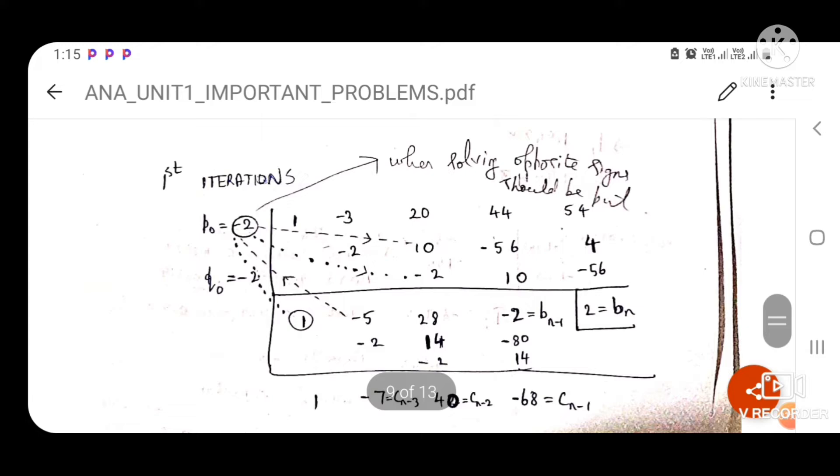Now we're doing the first iteration. We're given two initial points. When doing it, we put it in the opposite sign of what it was given. For instance, we were given initial points as positive 2, so we will be putting them as negative 2 in order to solve the synthetic division.